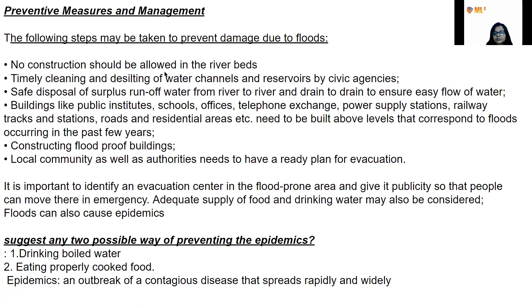Preventive measures for floods: No construction should be allowed in river beds. Timely cleaning and desilting of water channels by civic agencies. Safe disposal of surplus runoff water from river to drain to ensure easy flow. Buildings like public institutes, schools, offices, railway tracks and roads need to be built above flood levels. Constructing flood-proof buildings. Local communities as well as authorities need to have a ready evacuation plan — when you receive information that a flood is coming, you should immediately leave the area to avoid damage.